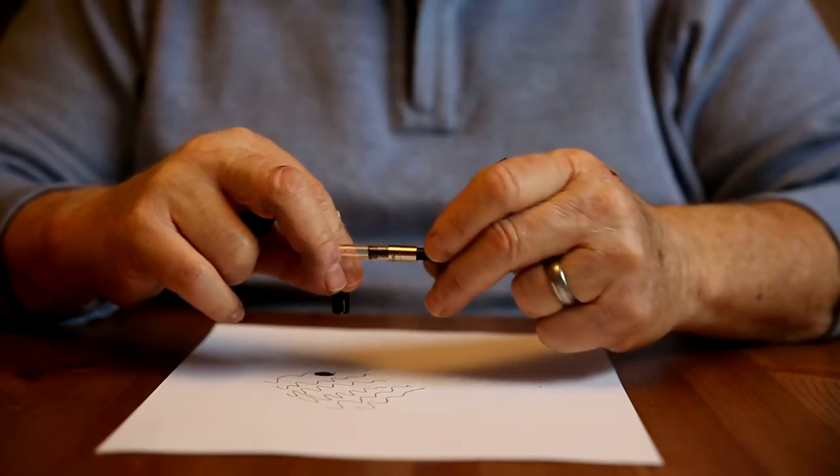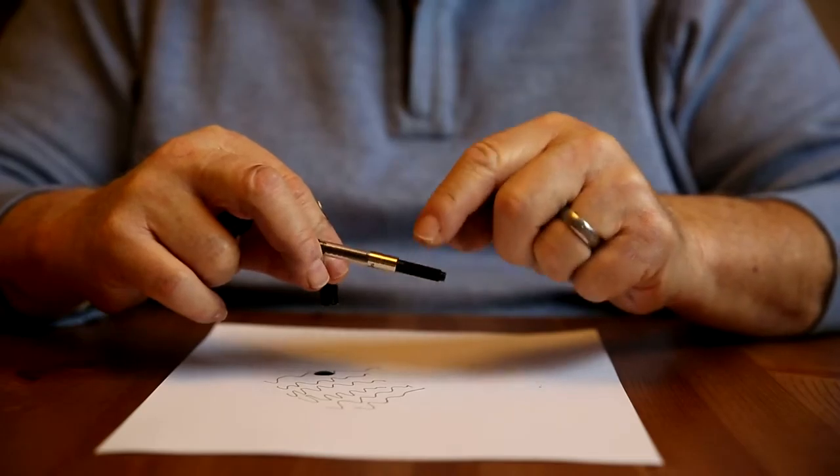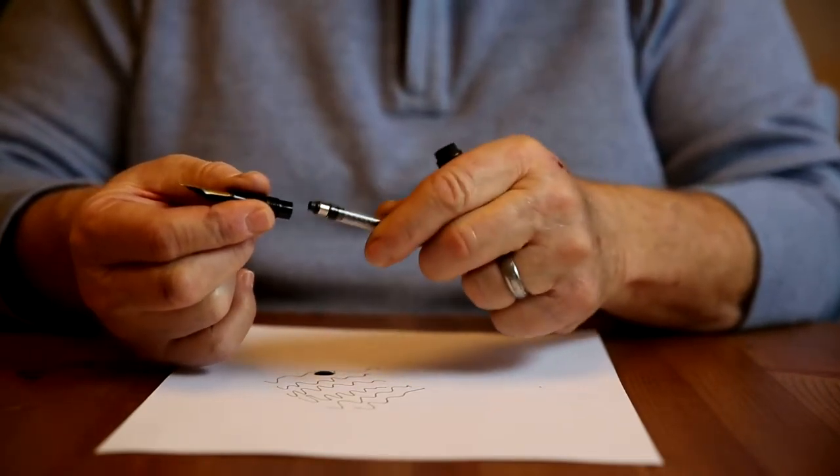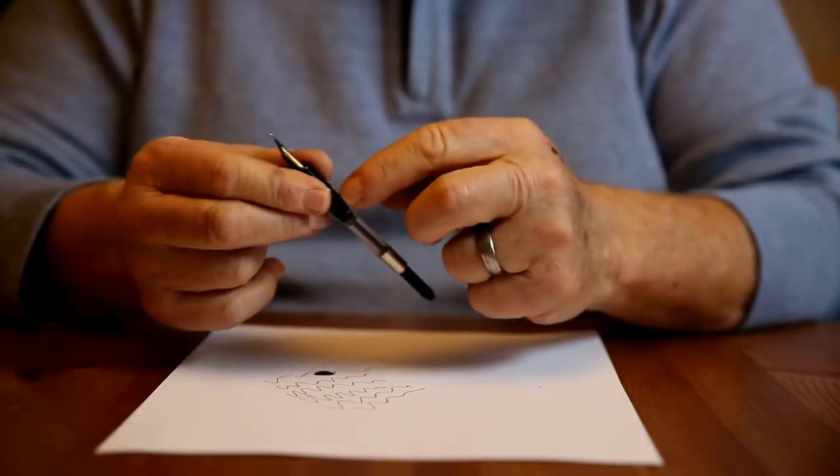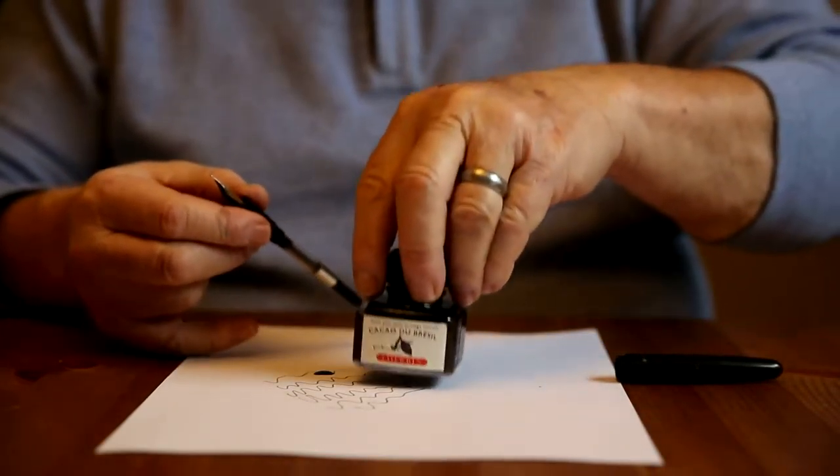That reservoir is filled using a plunging mechanism that's screwed from the base of the converter. Once again, take the nipple and place it firmly into the end of the section. Once you've done that, you simply need a bottle of your favorite ink.